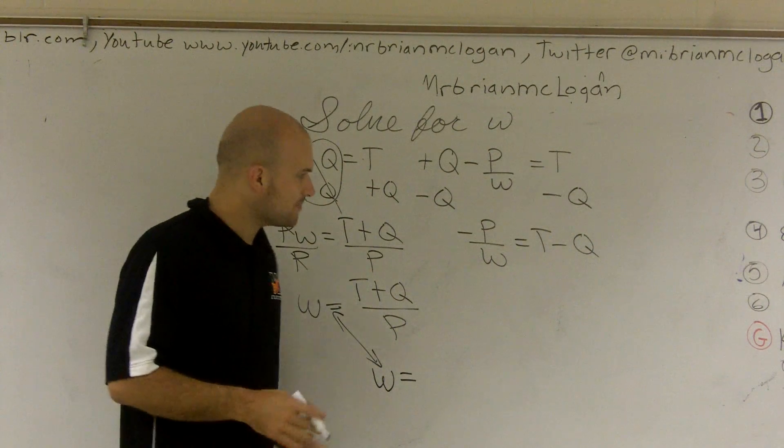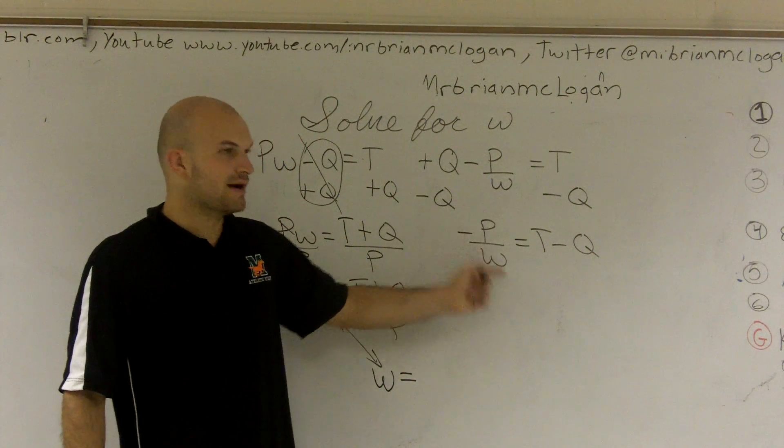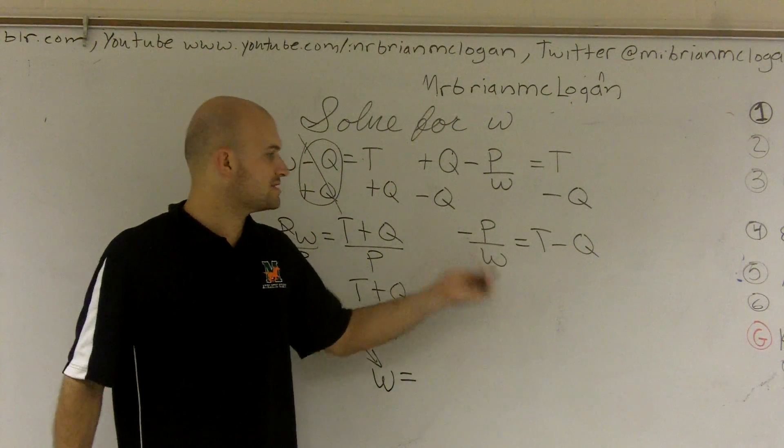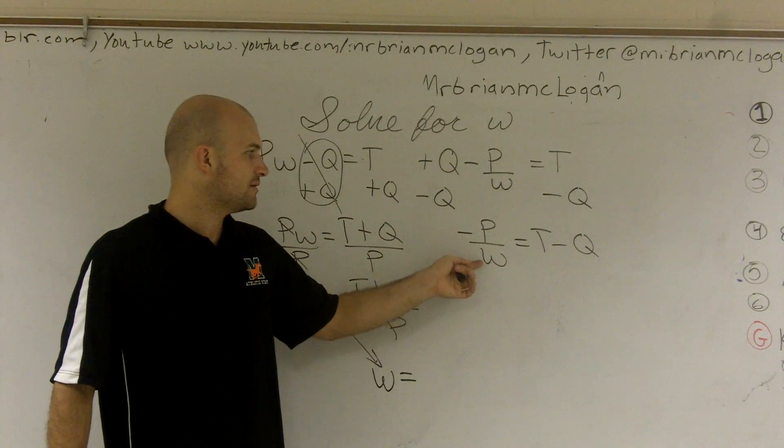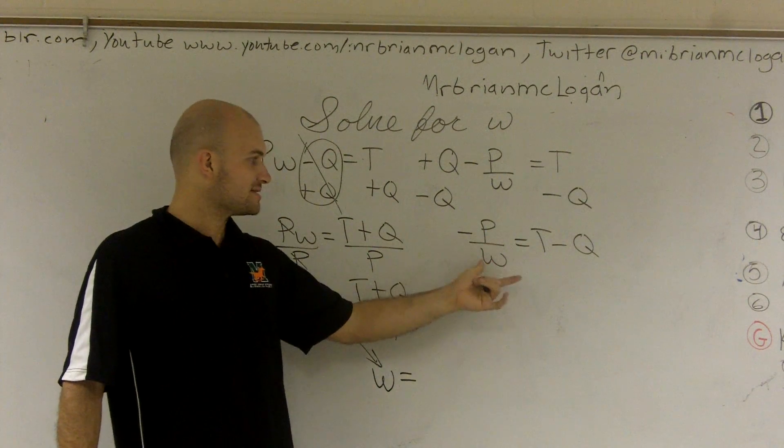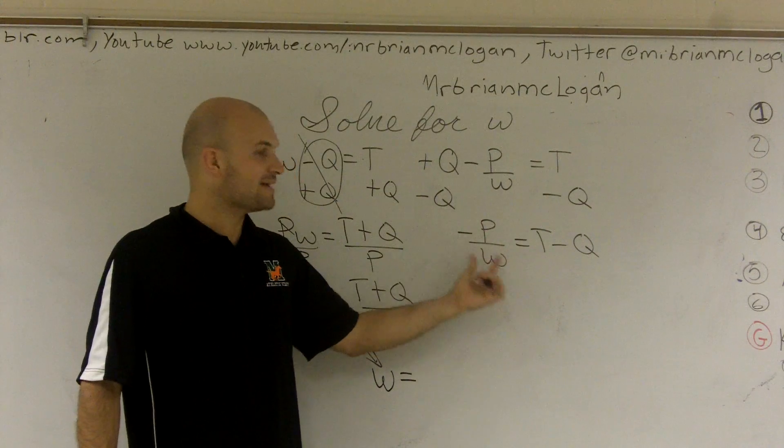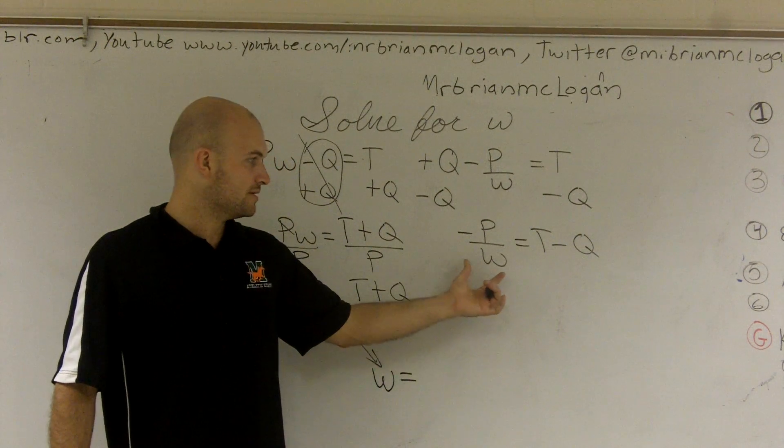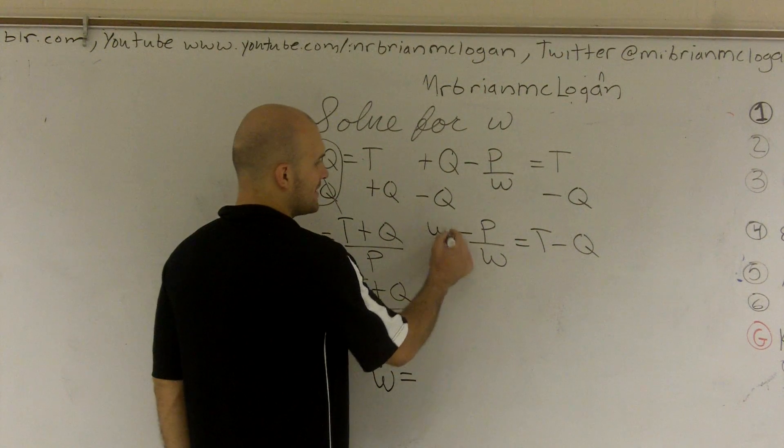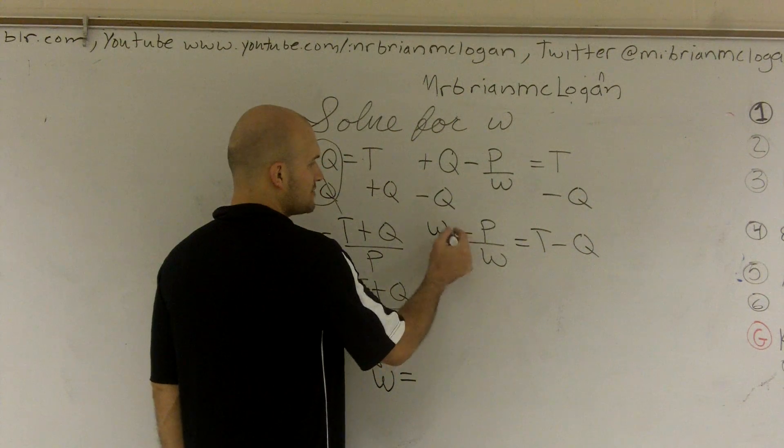Now, here's where we have our problem. We have this w on the bottom, right? And we need to get the w off of the bottom, right? So this is a fraction. What means this is I'm dividing by w. So I'm going to have to undo this division. So what I'm going to have to do to undo that, I'm going to have to multiply by w on both sides.